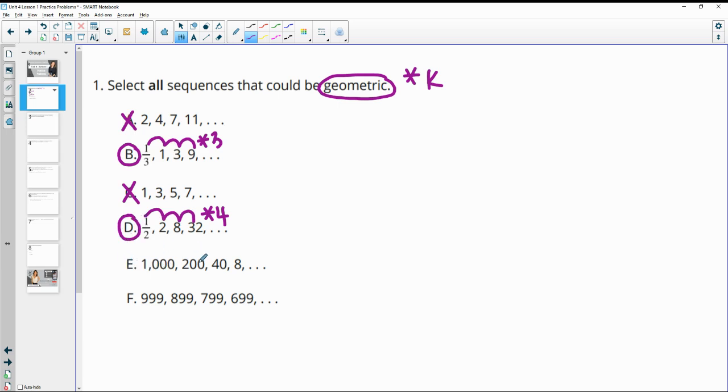Part E: we have one thousand to two hundred, two hundred to forty, forty to eight. So maybe you're noticing that this one is dividing by five each time. And dividing actually means that we're multiplying by one fifth. So this one is geometric.